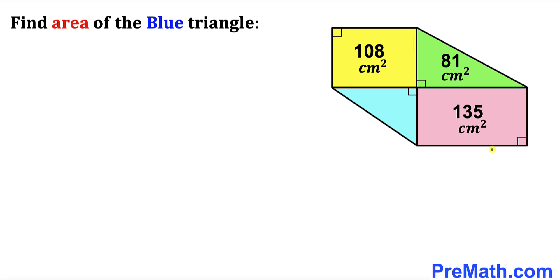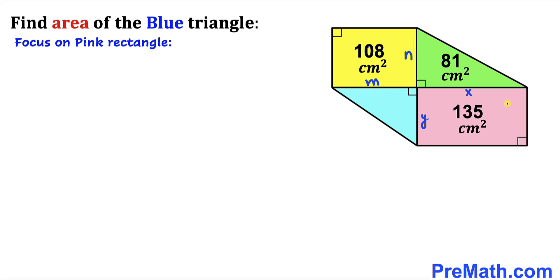Let's label the side lengths of these rectangles. For the pink rectangle, I'll label one side as x and the other as y. For the yellow rectangle, I'll call the sides m and n.